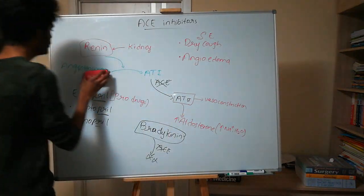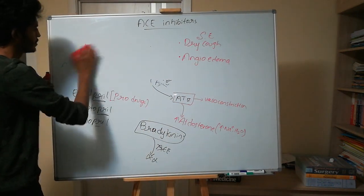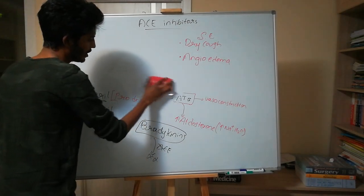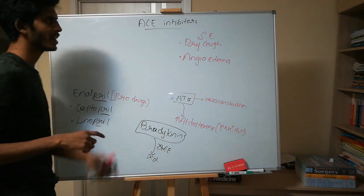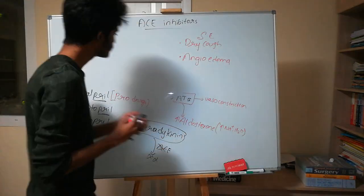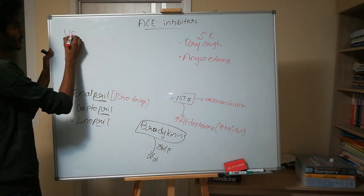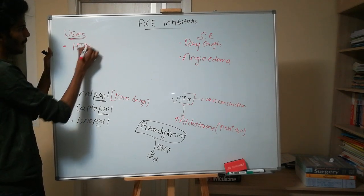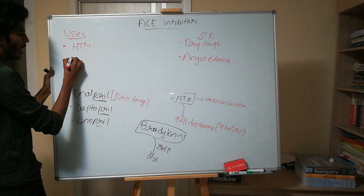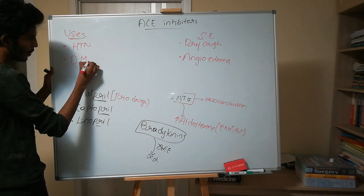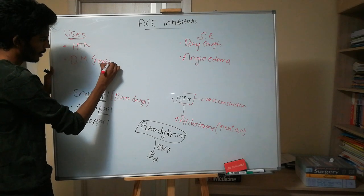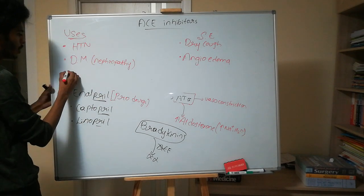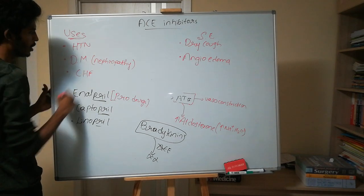Now where do we use ACE inhibitors? ACE inhibitors are first-line antihypertensive drugs. Apart from treating hypertension, we can also use them in diabetic nephropathy — because they are nephroprotective drugs — and also during congestive heart failure.